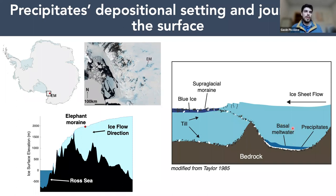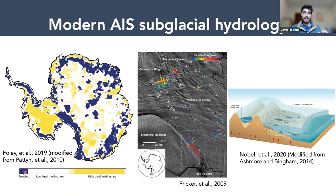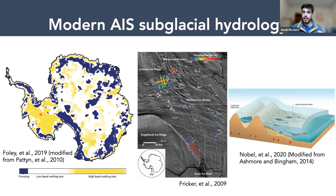For this talk, I'll be presenting subglacial precipitates as a way to learn about basal meltwater environments. For background, I'll start with what we know about the modern subglacial environment. This map from Foley and others in 2019, modified from a model by Patton and others in 2010, shows regions of the basal ice sheet expected to have freezing versus melting in the subglacial environment. For much of both the East and West Antarctic ice sheets, you'd expect basal melting, while towards the edges with thinner ice, the subglacial environments are colder and you get subglacial freezing.